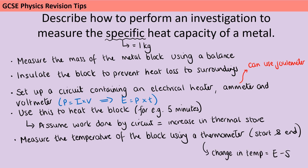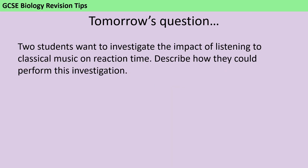Then we can use our specific heat capacity formula rearranged, and we can work out that specific heat capacity is going to be the change in energy divided by the mass times the change in temperature. How did you get on?